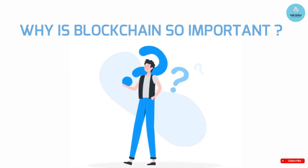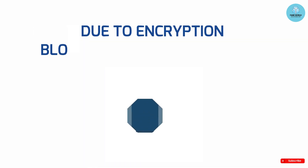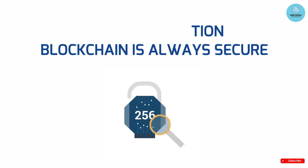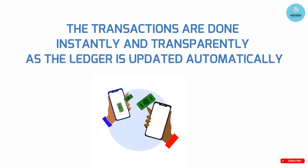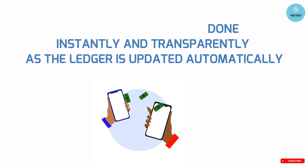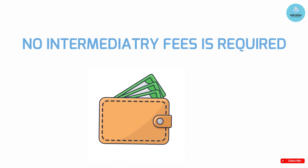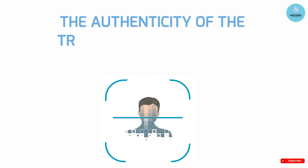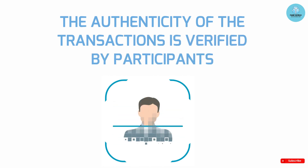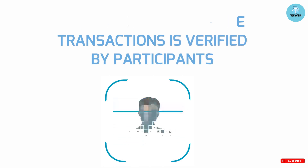Why is blockchain so important? 1. Due to the encryption feature, blockchain is always secure. 2. The transactions are done instantly and transparently as the ledger is updated automatically. 3. As it is a decentralized system, no intermediary fees are required. The authenticity of the transaction is verified and confirmed by participants.